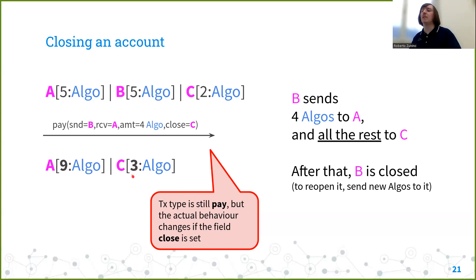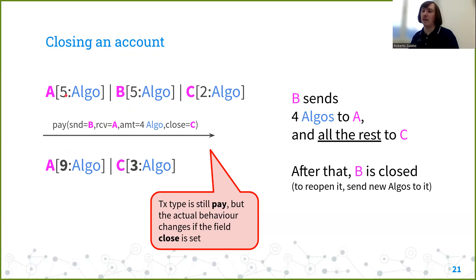Addressing a correction from the first part: in the slide about close-remainder-to, the transaction was a pay moving four algos from B to A. So four of B's five algos are moved to A, bringing A from five to nine algos. Then the close-remainder-to field is set to C, meaning the remaining one algo is sent to C. There was a typo — it should read three, not one, as some students pointed out.